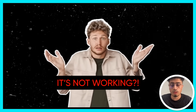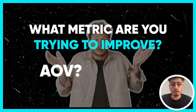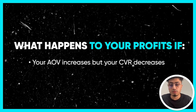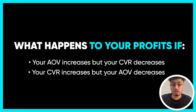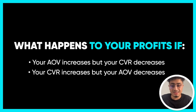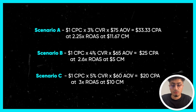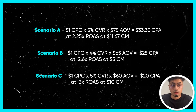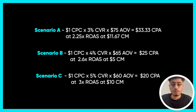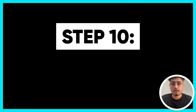Step nine: understand your numbers and your targets. A client might say 'I tested this landing page but it didn't work' — the question is: what metric are you trying to improve above your baseline? Are you trying to improve AOV or CVR? These two numbers are inversely related. As you can see in scenarios A, B, and C, when AOV decreases and CVR increases, your contribution margin — your profitability per customer — changes as well. Understand what metric you're optimizing for and tackle the problem from that point.